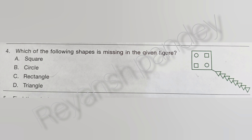Which of the following shapes is missing in the given figure? Square, Circle, Rectangle, Triangle. The answer is C — Rectangle.